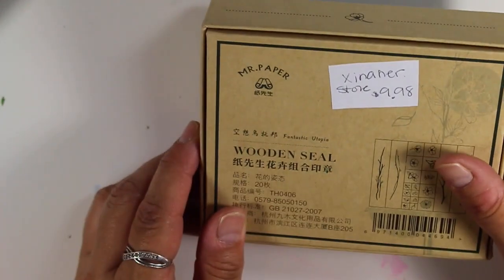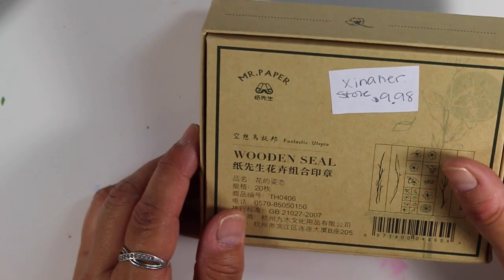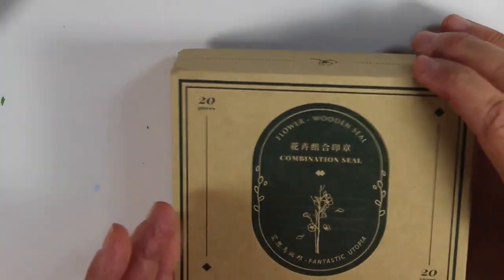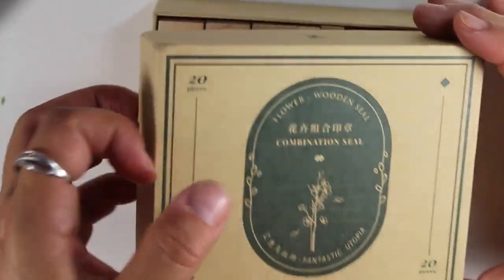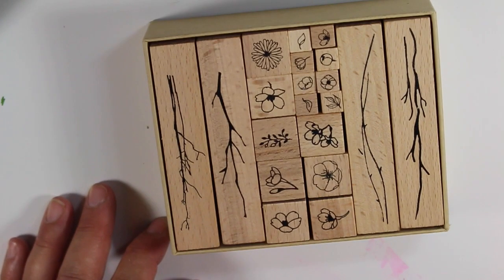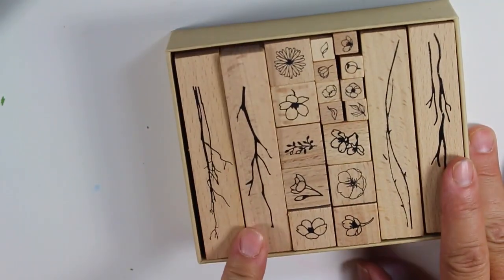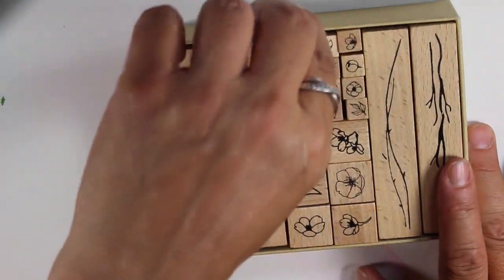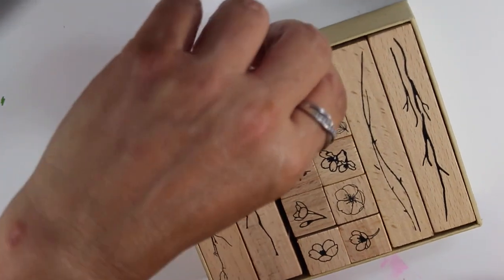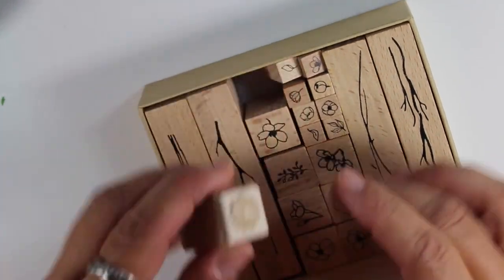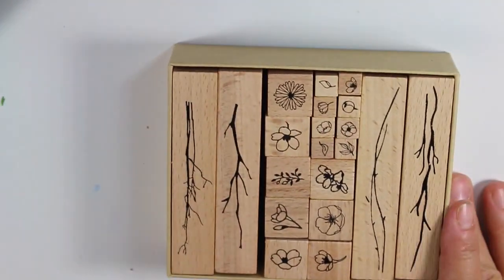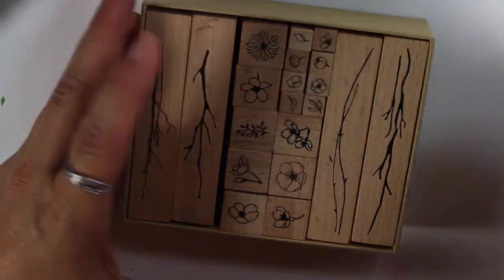The other thing I was really looking forward to getting was this stamp set from the XINANER store. This was $9.98. This is a 20 piece floral wooden stamp set and I was really excited to get this. Some of these are so teeny tiny and they're all stamps. You could make your own floral designs with them by using the different bases and putting the flowers on them. I actually can't wait to play with these because I think these are going to be a lot of fun. For $10 for 20 little wooden stamps, awesome deal.